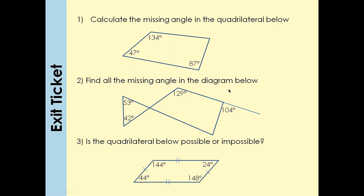Here are three more questions — pause the screen, give them a go, and we'll discuss the answers in a few minutes. For this question: angles in a quadrilateral add up to 360°. Adding 134° + 47° + 87° = 268°, and 360° − 268° = 92°. So the answer is 92°.